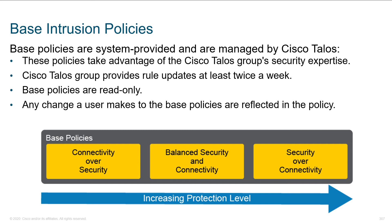Here are those base intrusion policies — connectivity over security, which is for the timid. Cisco recommends balanced security and connectivity. And for the super paranoid, maybe watching right now with a tinfoil hat, this would be for you — security over connectivity. Again, this is just a preset that's generalized, and then you're going to take this and potentially make some changes later.